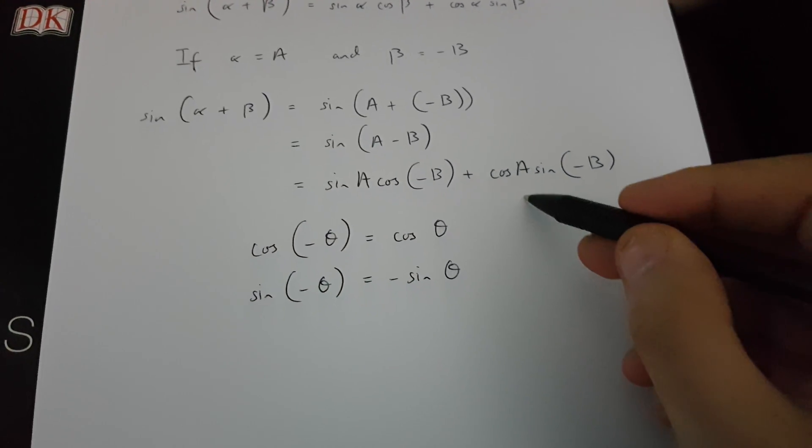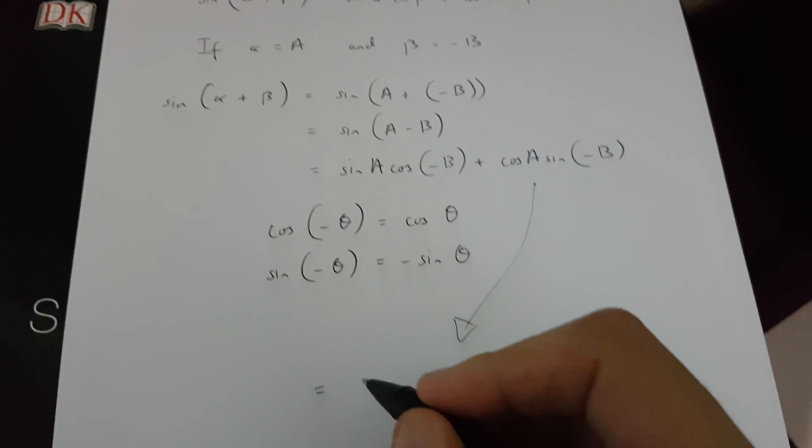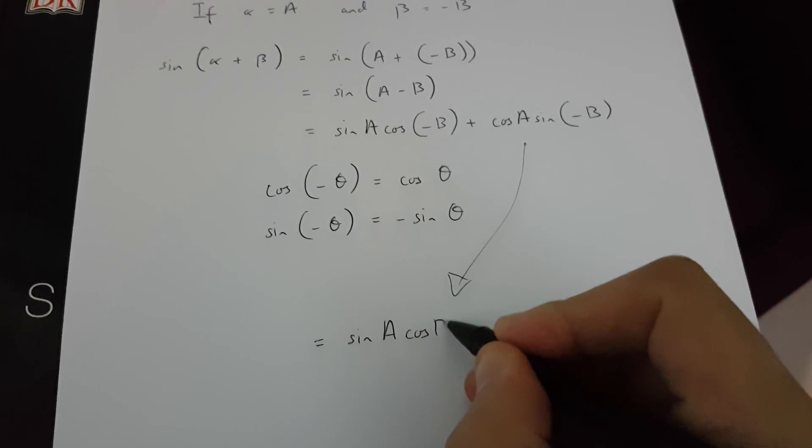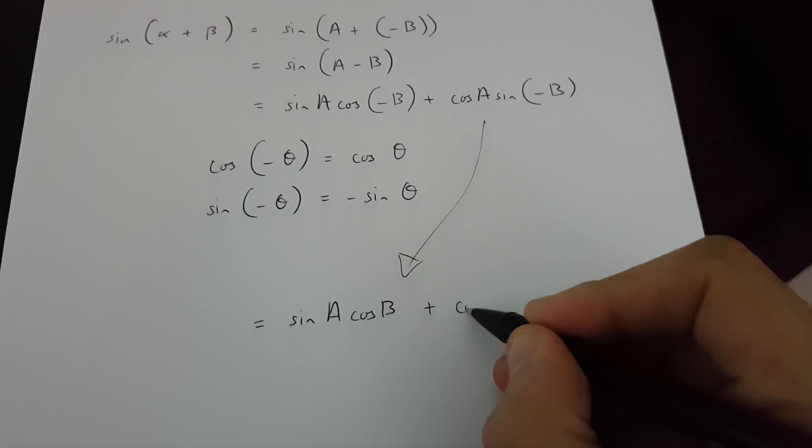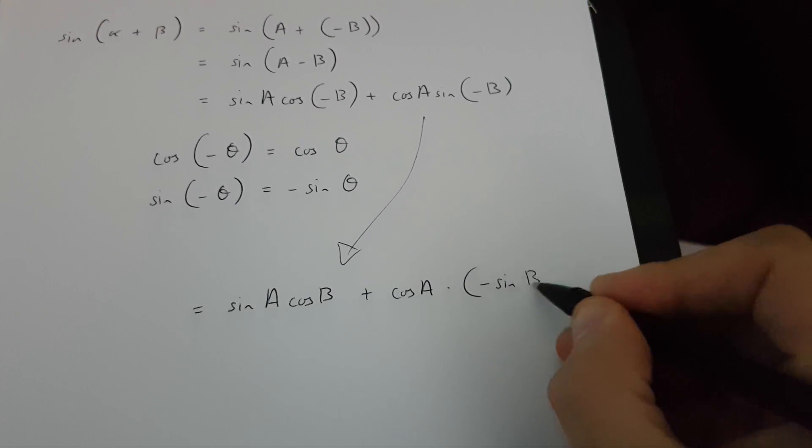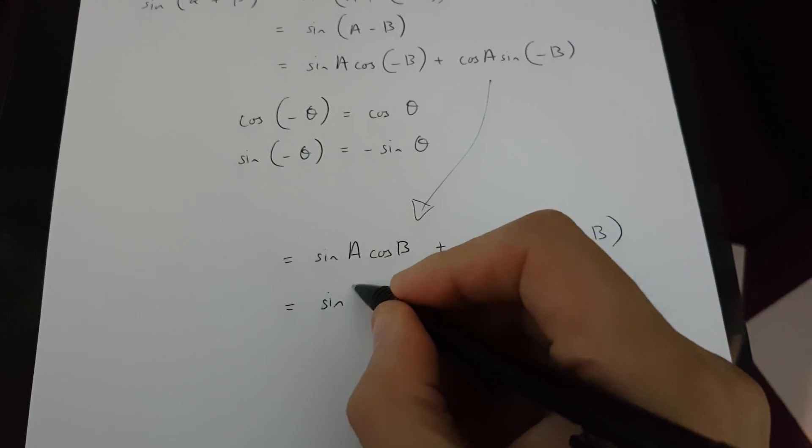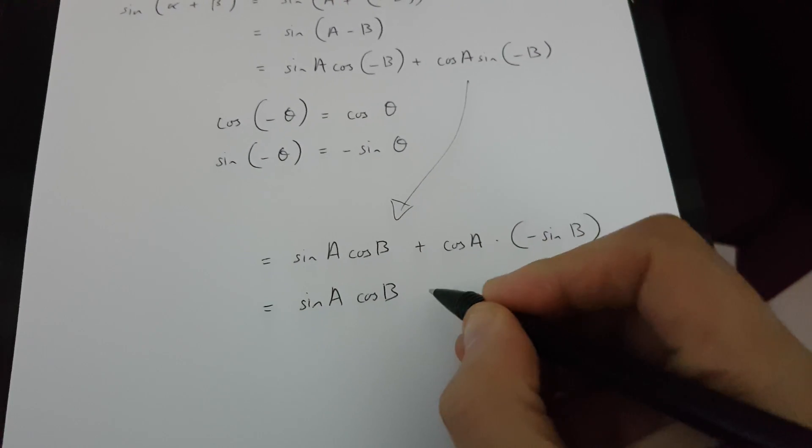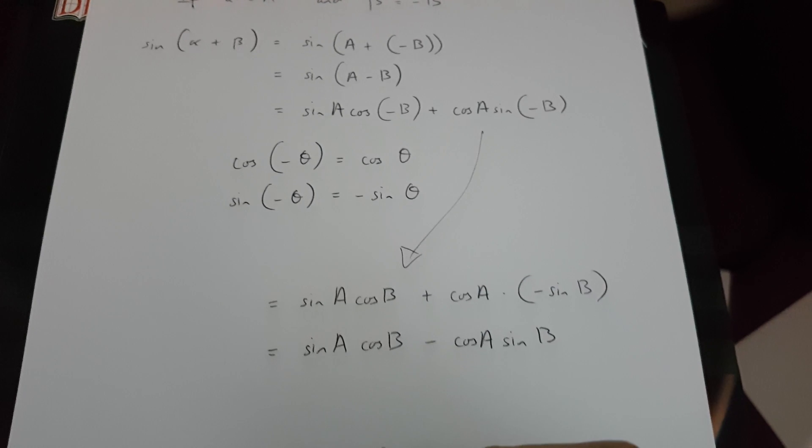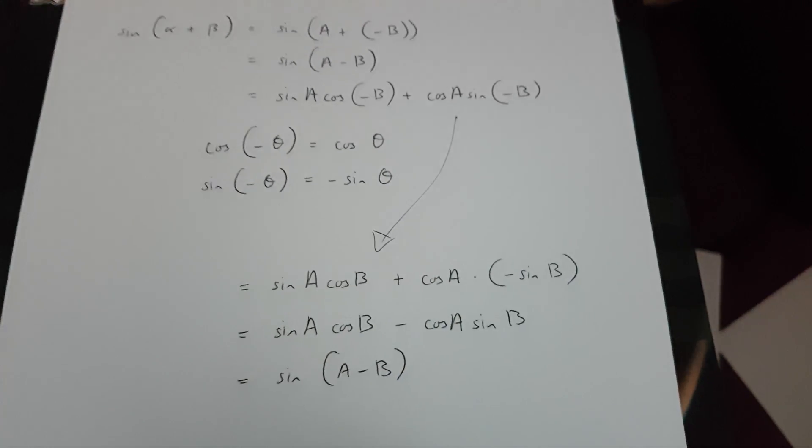If this is the case, then this expression over here is going to turn into sin A cos B plus cos A times minus sin B, okay? And this can be changed into sin A cos B minus cos A sin B, okay? And this is, in fact, sin(A - B) = sin A cos B minus cos A sin B, okay?